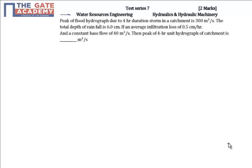This question is from Water Resource Engineering, from the topic Hydraulics and Hydraulic Machinery. In this question, the peak of four-hour unit hydrograph of a catchment is asked in meter cube per second, where peak of flood hydrograph due to four-hour duration storm in a catchment is 300 meter cube per second. Total depth of rainfall is 6 centimeter.